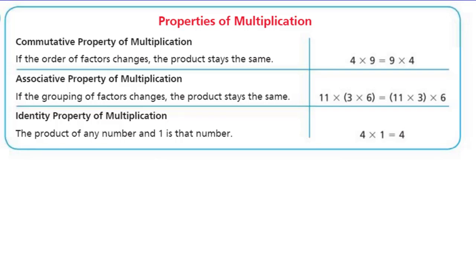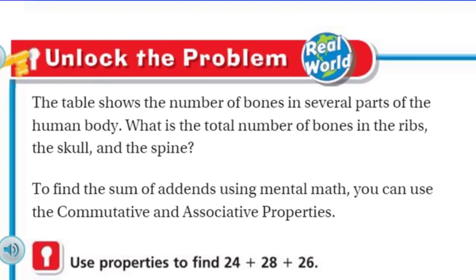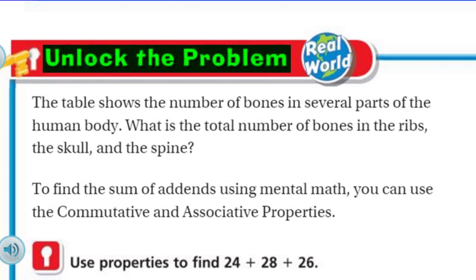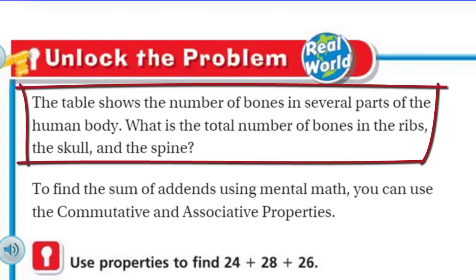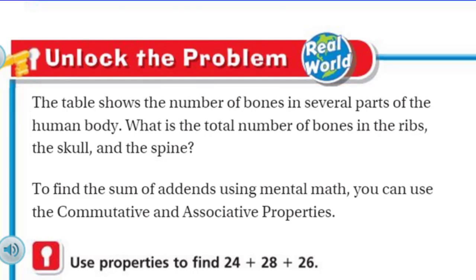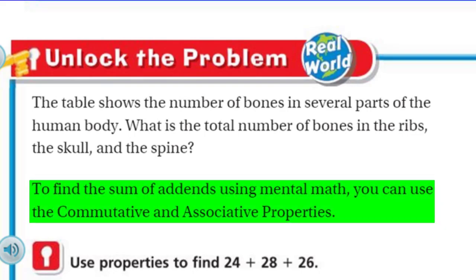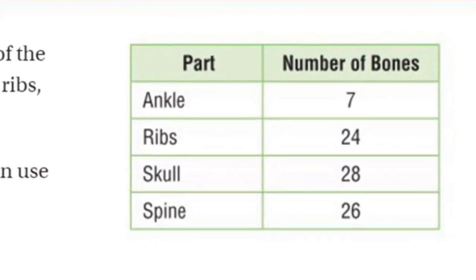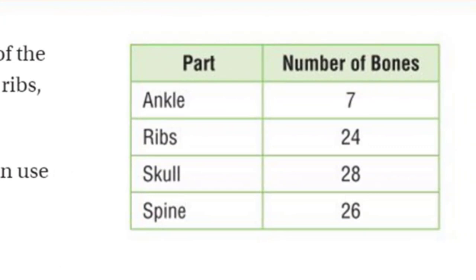Those are the properties — that's our focus for today's learning target. Now let's unlock the real-world problem! The table shows the number of bones in several parts of the human body. What is the total number of bones in the ribs, the skull, and the spine? Looking at our table: Ribs — 24, Skull — 28, Spine — 26. Amazing!